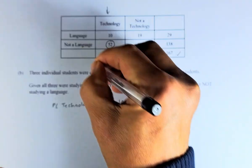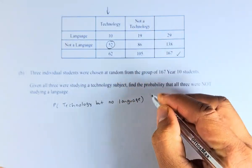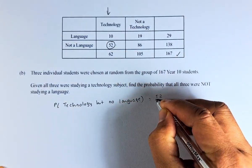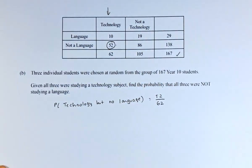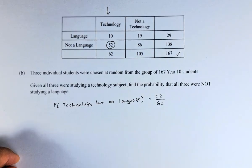very simple because we are doing only technology, not language. So you are going to be 52 over 62. But they were talking about 3 students.